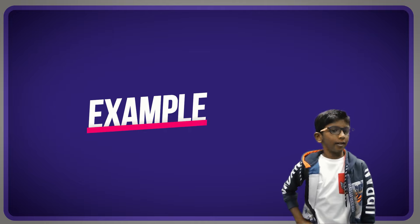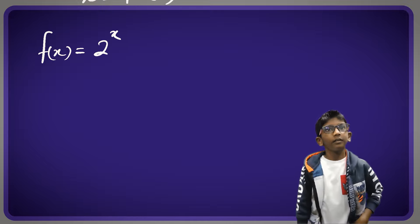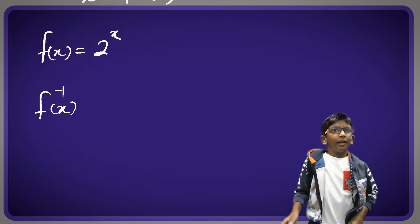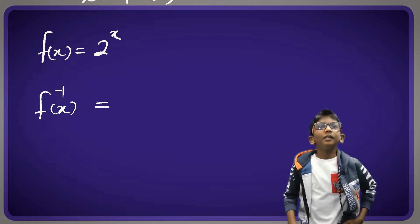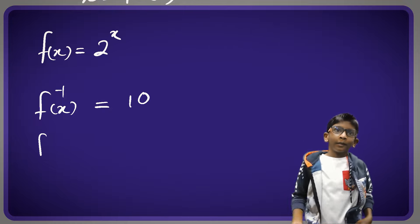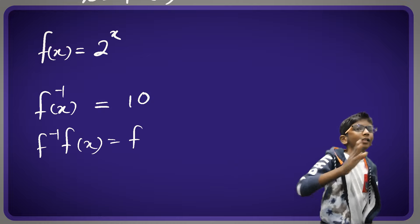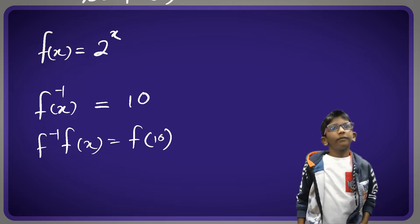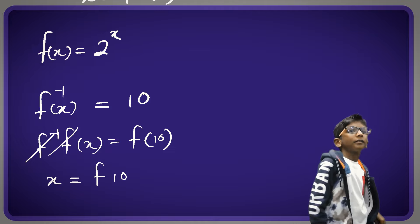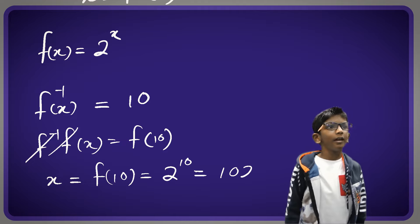Here is an example. f(x) equals 2 to the power of x. Finding the inverse of x equals 2 to the power of x, and this is quite hard. But if a question was like this, if they had the f inverse, f inverse of x is 10 for example, we can just cancel because we put the f inverse of x on that side. f inverse of x equals f(10), and then x equals f(10) which equals 2 to the power of 10 which equals 1024.